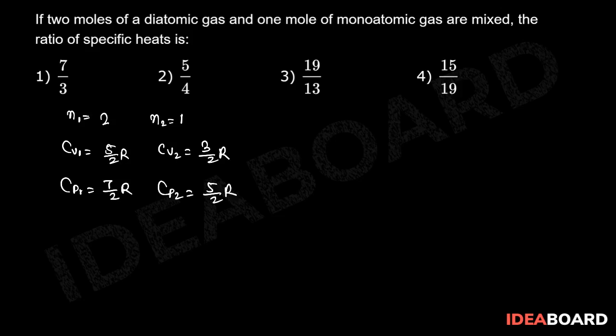Now we have to find ratio of specific heat. Therefore CP by CV will be equal to N1CP1 plus N2CP2 divided by N1CV1 plus N2CV2.